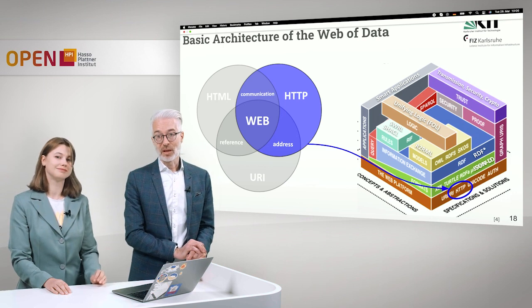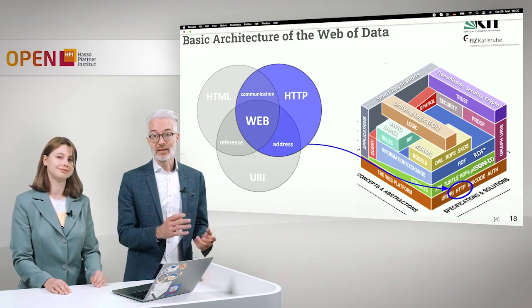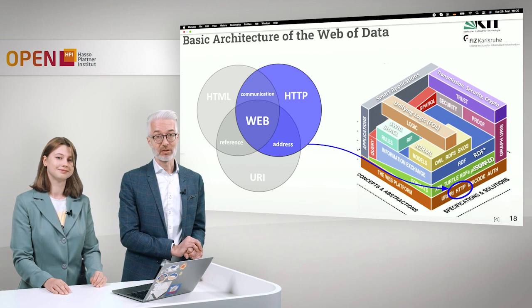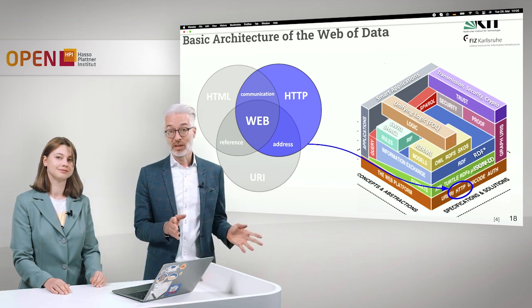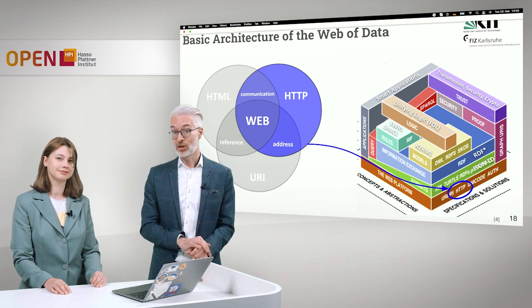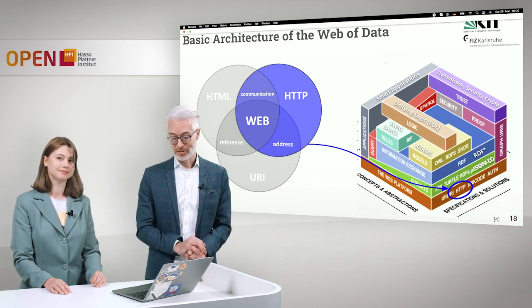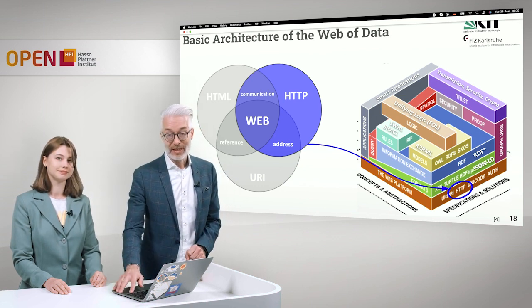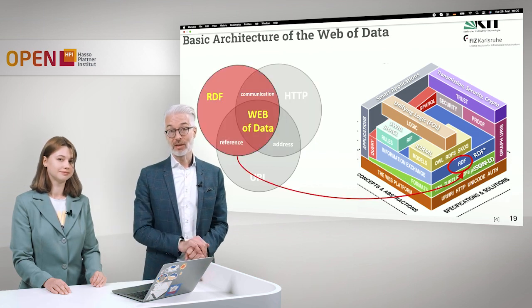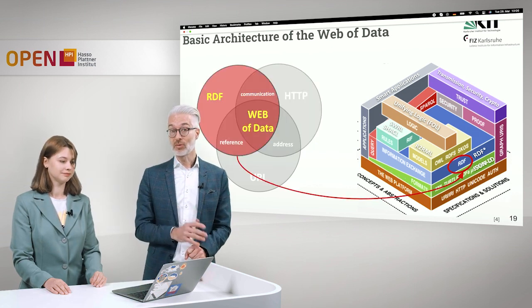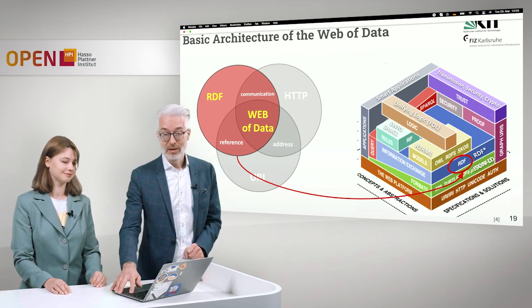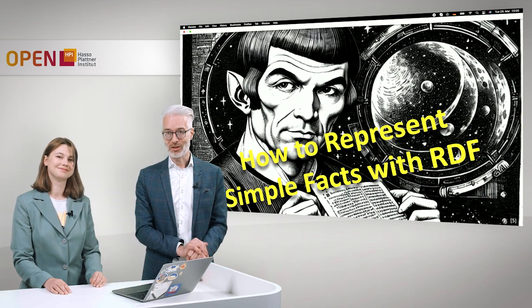If we step up in the web platform — the ground layer of the Semantic Web Technology Stack — all of this information is transported via HTTP, as we have just seen with content negotiation. What is next is that we have to encode the message, the information we want to pass, and this is done in RDF — the Resource Description Framework — which is the subject of our next lecture.